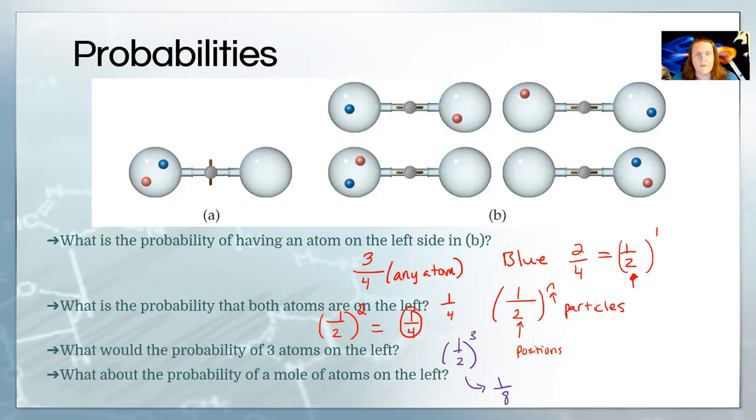What if we had a mole of atoms, though? That's much more realistic. You almost never have just like one or two or three atoms. If we had a mole of atoms, it's still only two positions. Put it in your calculator. What do you get?